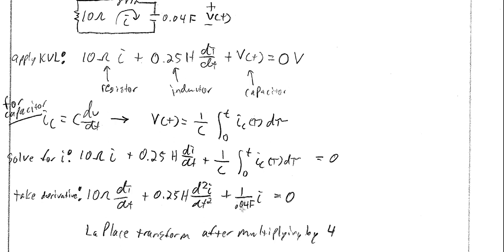One thing to note: we could have very easily solved this in terms of V. You could leave everything in terms of V of t, plug in C dv/dt for the current i, and C times the second-order derivative of v for di/dt — leaving everything in terms of v to solve accordingly. That would actually make it much easier than the approach I'm taking here. I suggest that as you study, go back and try solving it in terms of v, dv/dt, and the second-order derivative of v — it works out to a much cleaner solution.